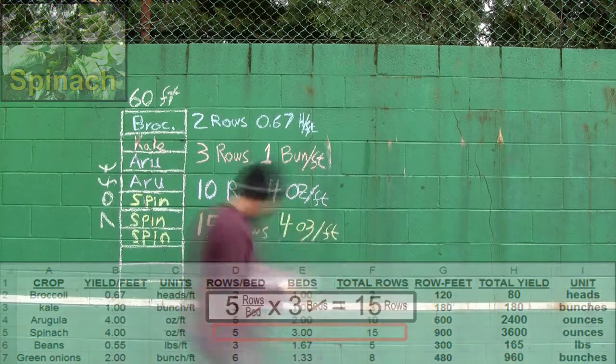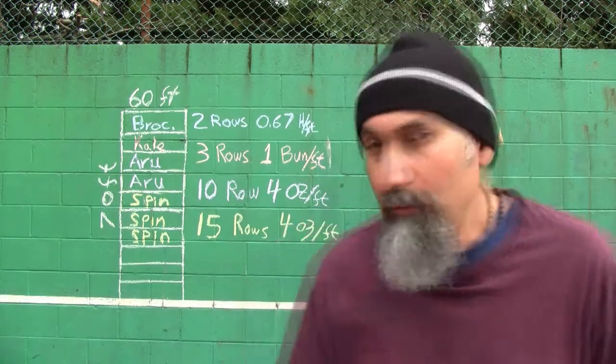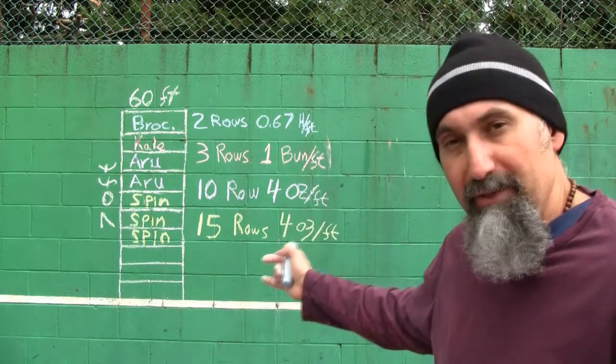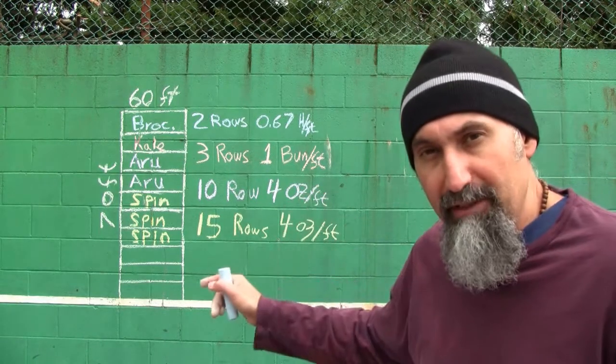In beds five, six, and seven, we're going to plant spinach. The specs for spinach are four ounces per foot, and you can plant five rows per bed. So if we're planting three beds of spinach, we're going to get a total of fifteen rows of spinach.